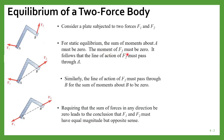The moment of F2 about A must be zero. Since F1 is acting at A, its moment about A will be zero. For the moment of F2 about A to be equal to zero, F2 must pass through A. If F2 is not passing through A, there will be a component which will create some moment. So for the moment of F2 to be zero about A, F2 must pass through A.